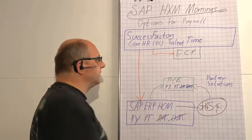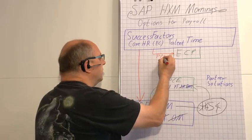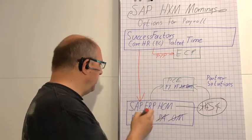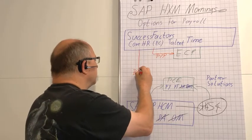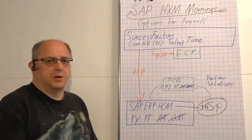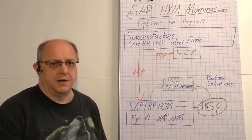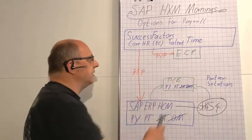So again, Employee Central is the leading system of record, but here we have a point-to-point connection with no middleware. In the hybrid scenarios we have a middleware with the Business Technology Platform from SAP, formerly known as SAP Cloud Platform, formerly known as HANA Cloud Platform.